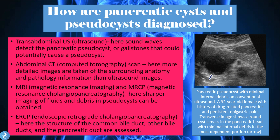Pancreatic cysts and pseudocysts can be diagnosed using several methods. A transabdominal ultrasound uses sound waves to detect pseudocysts or gallstones that could cause a pseudocyst. An abdominal CT (computerized tomography) provides more detailed images of surrounding anatomy and pathology than ultrasound. MRI and MRCP provide sharper imaging of fluids and debris in the pseudocyst, and ERCP (endoscopic retrograde cholangiopancreatography) assesses the structure of the common bile duct, other bile ducts, and the pancreatic ducts.